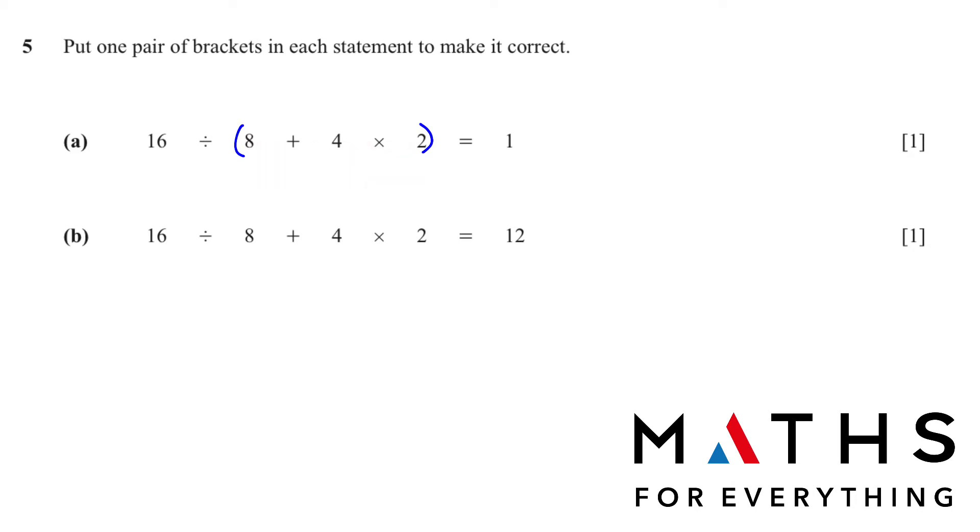Because first, we use the BIDMAS or BODMAS, whatever you call it. The first thing in the order of operation is multiplication. So 4 multiplied by 2, 8. 8 plus 8, 16. And 16 divided by 16 will give us 1.